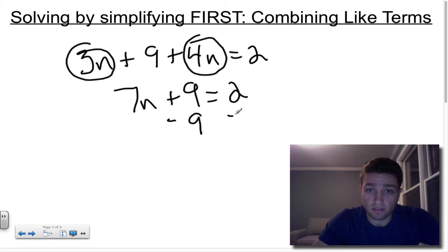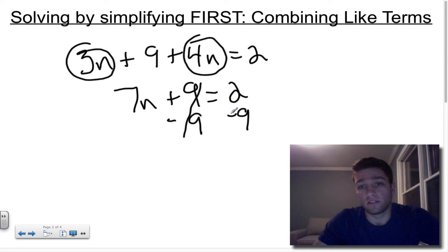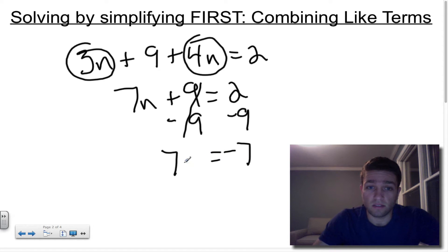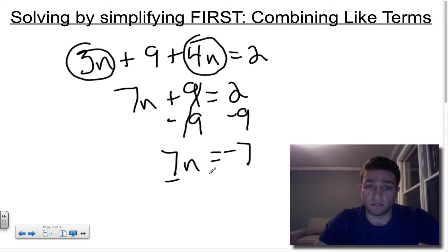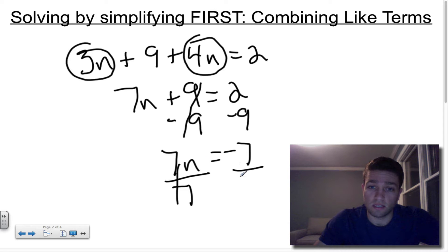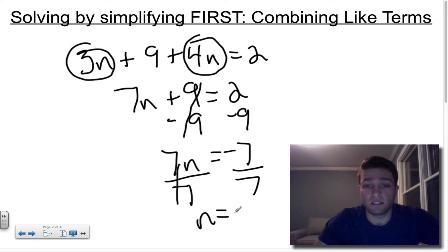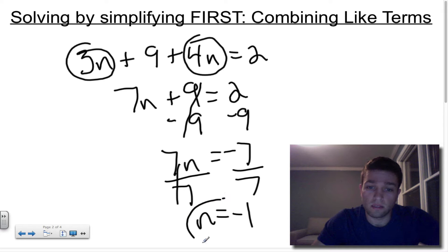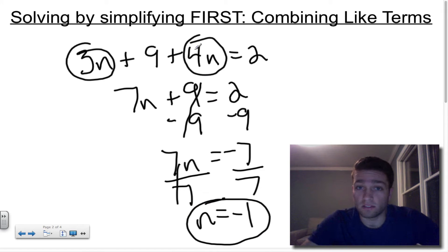Remember, you're solving in the reverse order of operations, so subtract 9 from both sides first. 9 minus 9 is 0, and 2 minus 9 is negative 7. So I'm left with 7n = -7. Then divide both sides by 7: negative 7 divided by 7 is negative 1. So n = -1.